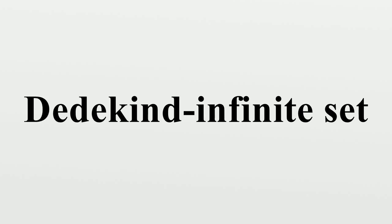Every Dedekind-infinite set A also satisfies the following condition: there is a function f from A to A that is surjective but not injective. This is sometimes written as A is dually Dedekind-infinite. It is not provable that dual Dedekind-infinity implies that A is Dedekind-infinite. In ZF, every dually Dedekind-infinite set satisfies: there exists a surjective map from A onto a countably infinite set, and the power set of A is Dedekind-infinite. ZF also shows that every well-ordered infinite set is Dedekind-infinite.